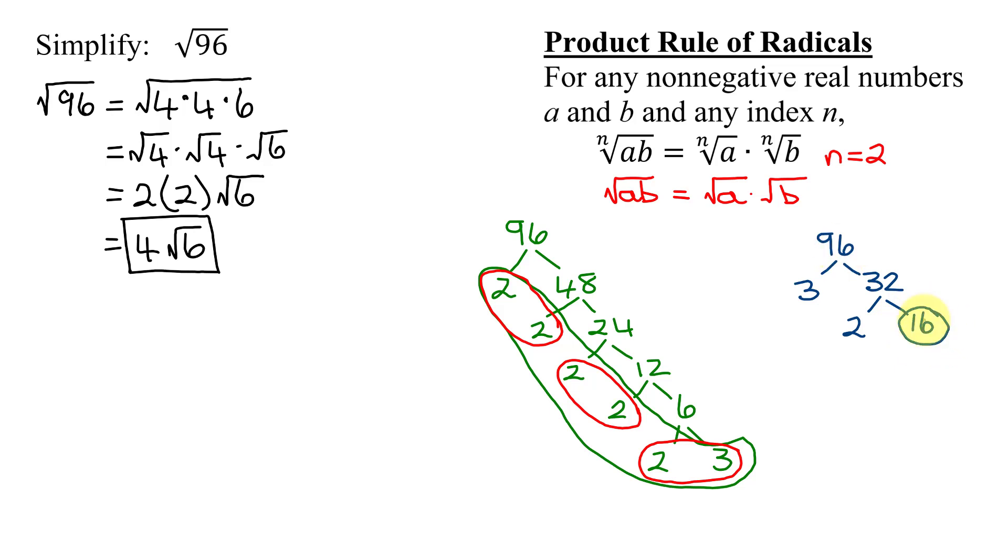So I'm going to write 96 as 16 times 6. So the square root of 96 is the square root of 16 times 6, which using this rule is the square root of 16 times the square root of 6. So my answer is 4 times the square root of 6.